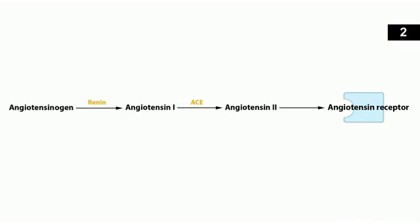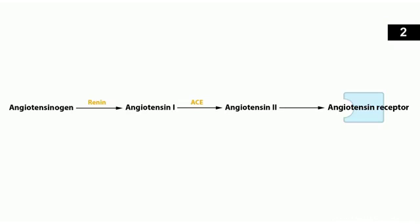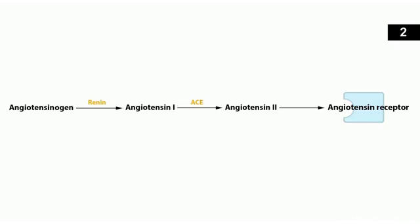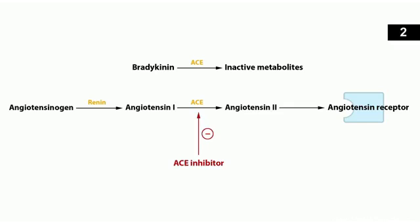ACE inhibitors and ARBs both act on the renin-angiotensin-aldosterone system, but they act at different points in the pathway. ACE inhibitors work by inhibiting angiotensin converting enzyme, so that there's less angiotensin II circulating. But angiotensin converting enzyme also breaks down bradykinin, so when you inhibit it, there's more bradykinin circulating, and that can cause that nagging cough.